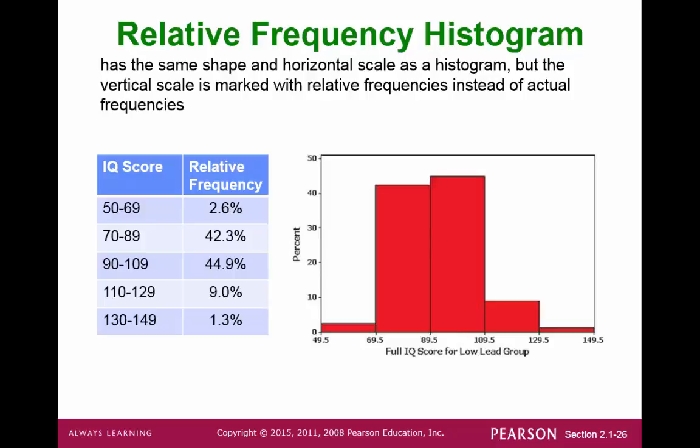A relative frequency histogram would look the same if you're talking about the same data set using the same classes. The big difference is that your vertical scale is being represented with percentages instead of counts.